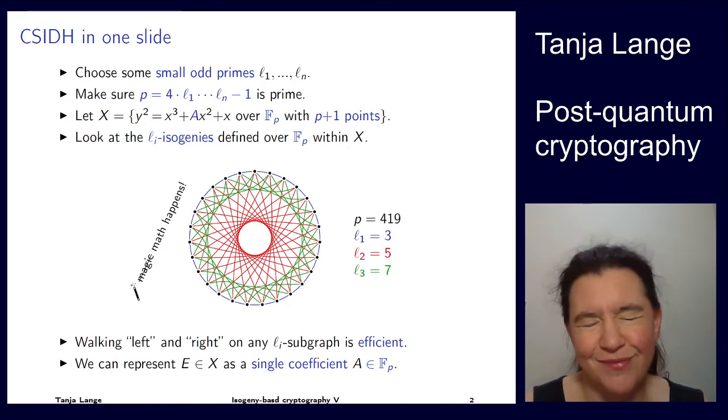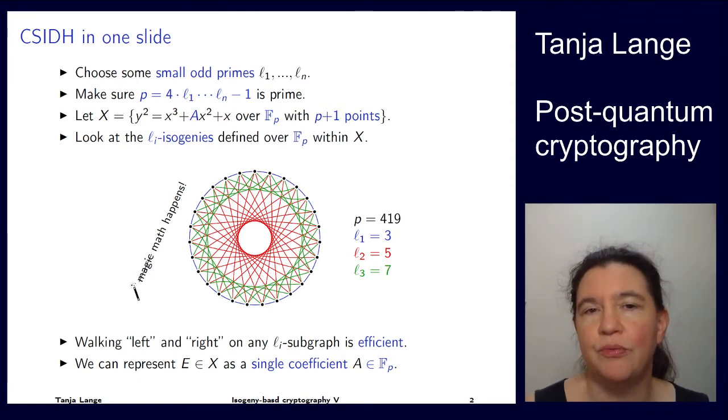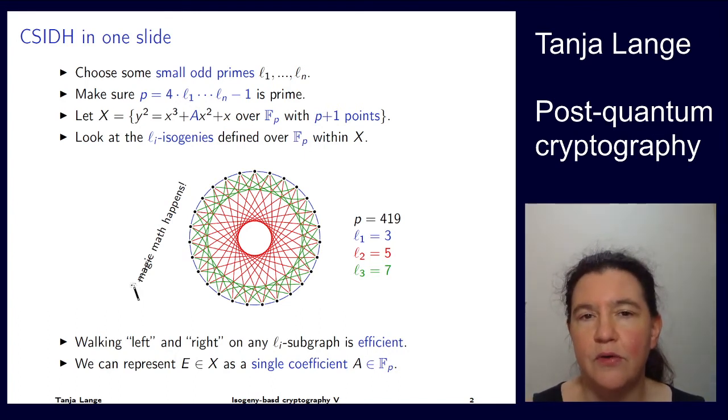What we're doing in CSIDH is we are picking a bunch of small primes and those are going to be the primes in which we want to compute the isogenies. We're picking them such that four times the product of all those primes minus one is prime. If we have a super singular curve over this Fp, it has p plus one points, which equals four times l₁ times l₂ times through lₙ.